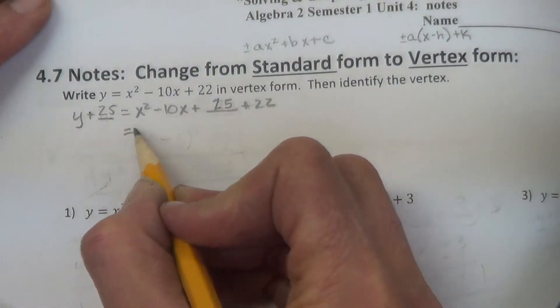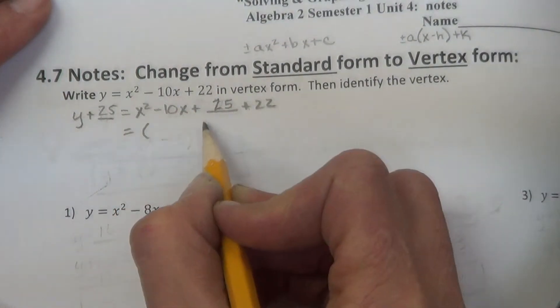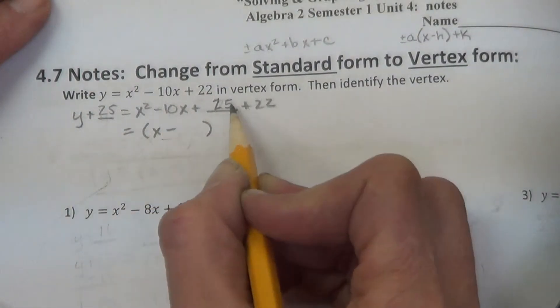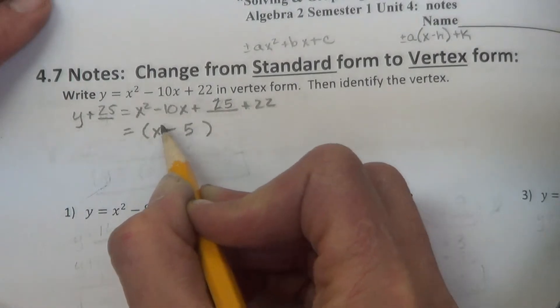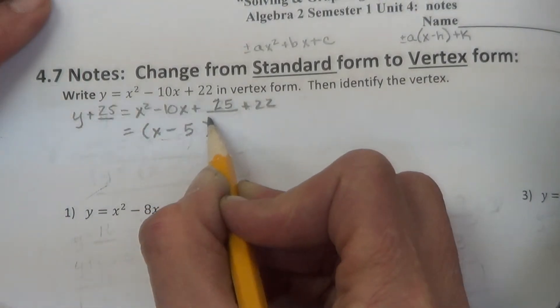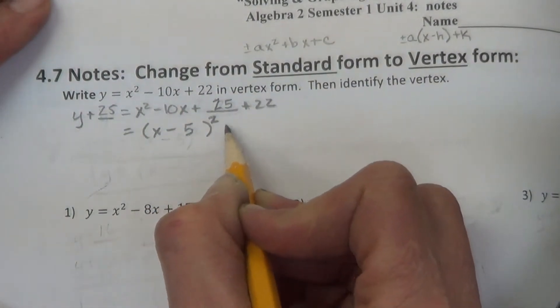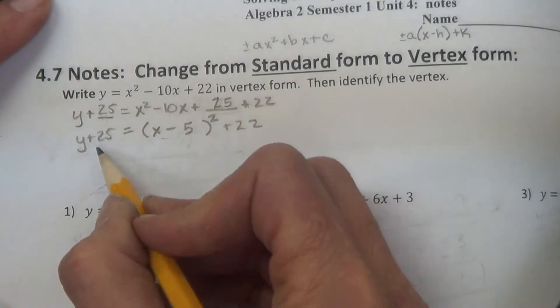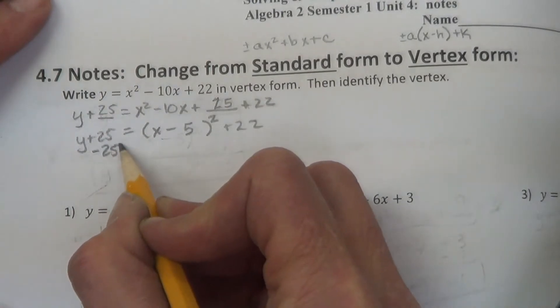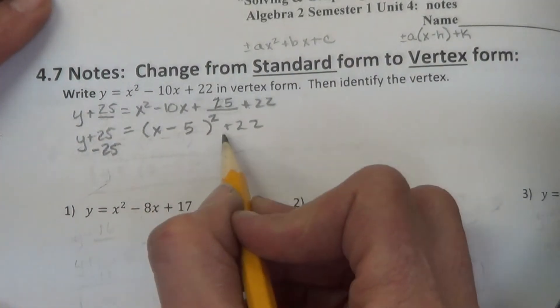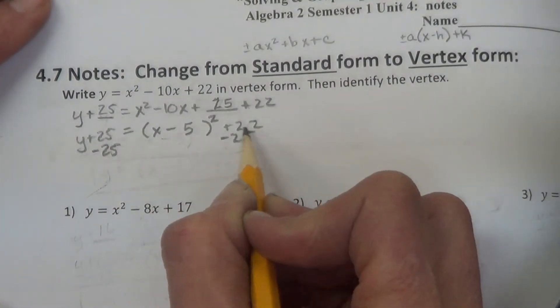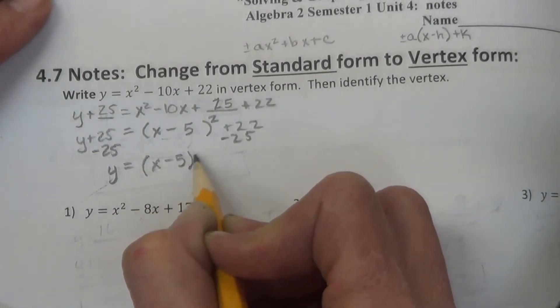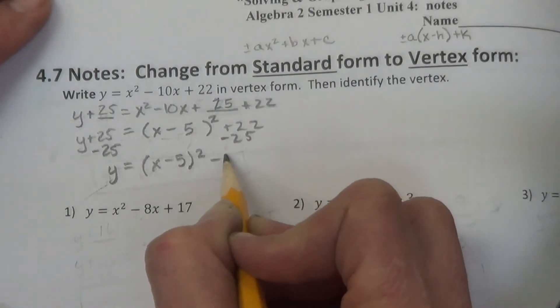Now to write our factor of this, it is simply the first term, the sign of the middle term, and the last term, the roots of those, and then we square it. So y plus 22 equals y plus 25. Now we subtract 25 from each side because we're trying to get y alone. And we get y equals x minus 5 squared minus 3. And that is our vertex form.